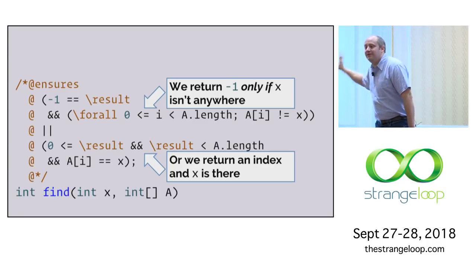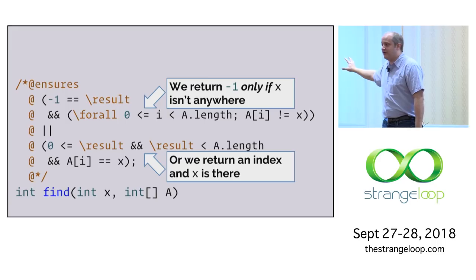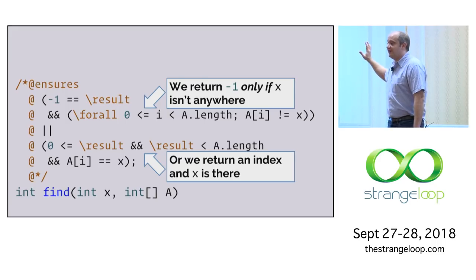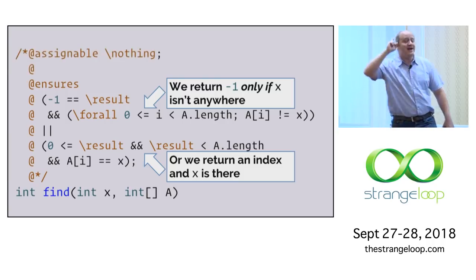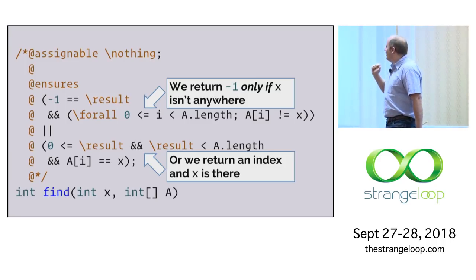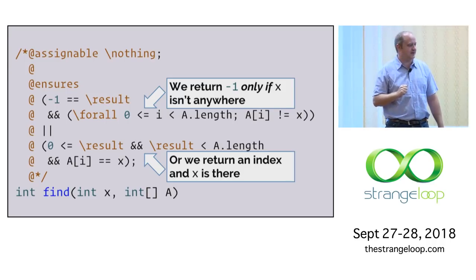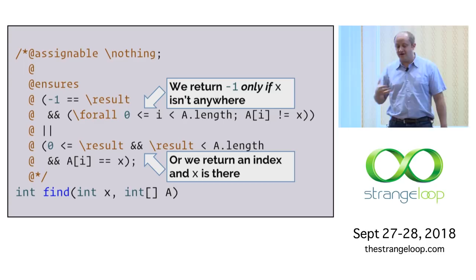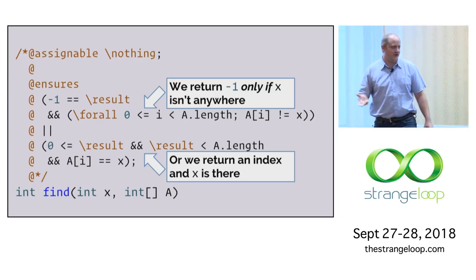At this point, this is a complete specification of search for an integer in an array. Any function that satisfies this postcondition is a valid search, unless it changes the array — which would be really bad. This is a complete specification of what it means to be a search function, and anything that satisfies this postcondition is a correct search function.